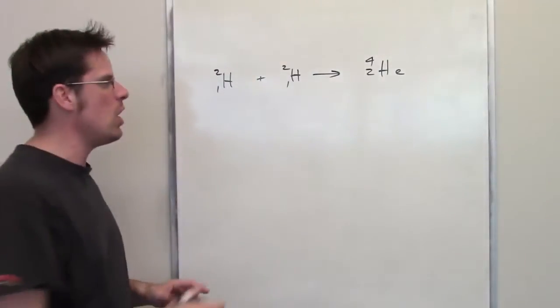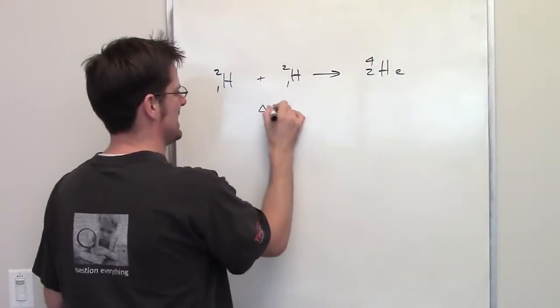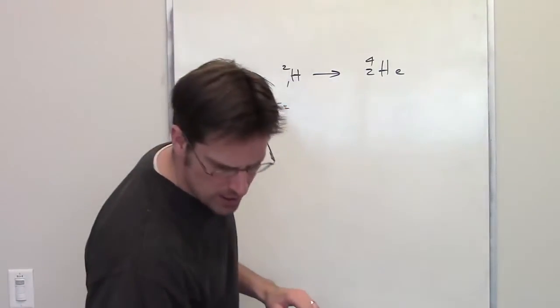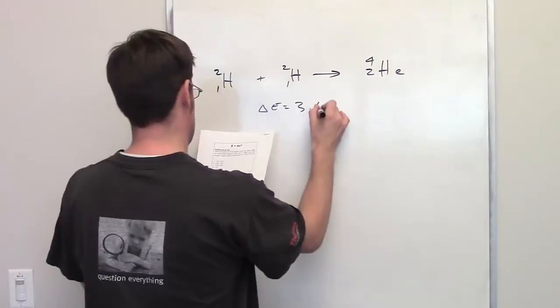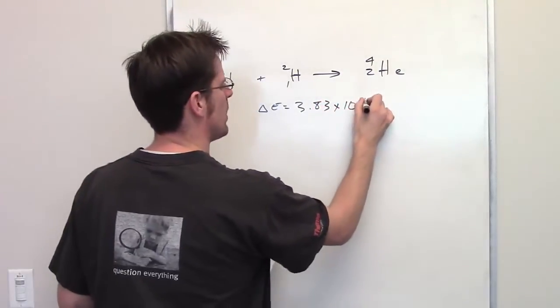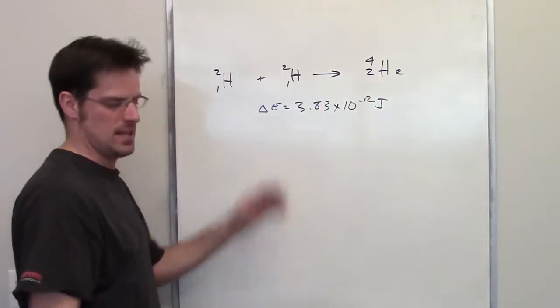It tells me furthermore that the total energy for this, so I'll go ahead and write down delta E, is equal to 3.83 times 10 to the negative 12 joules. So that's our delta E there.